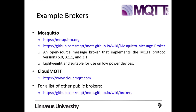There are multiple brokers available — some proprietary, some open source, and also cloud brokers. One very common broker is Mosquitto, which is an open source message broker that implements MQTT protocol versions 5.0, 3.1.1, and earlier versions like 3.1. Mosquitto is lightweight and suitable for use on all devices from low-power single-board computers to full servers. There is also cloud MQTT, which is highly used for IoT applications since it is hosted on the cloud.